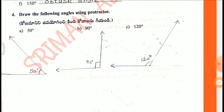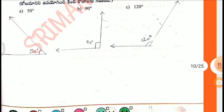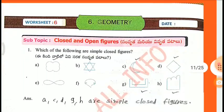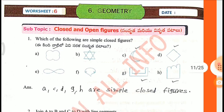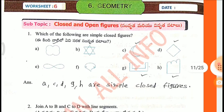Fourth one: Draw the following angles using a protractor — 50 degrees, 90 degrees, 120 degrees.